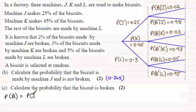Or, which would be a plus, mutually exclusive event—that is the probability it came from machine K and it's broken, or it could have come from machine L and broken.